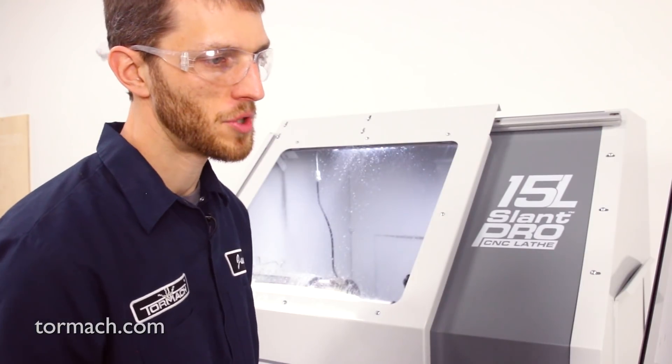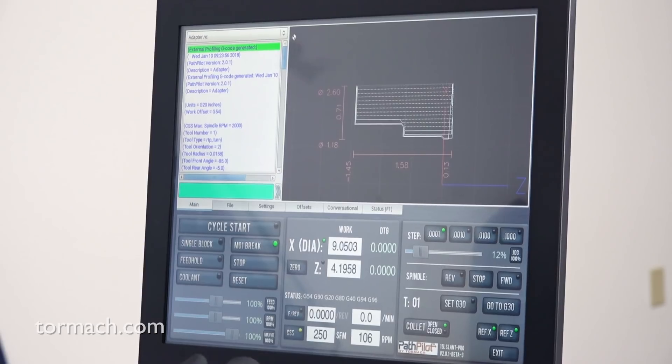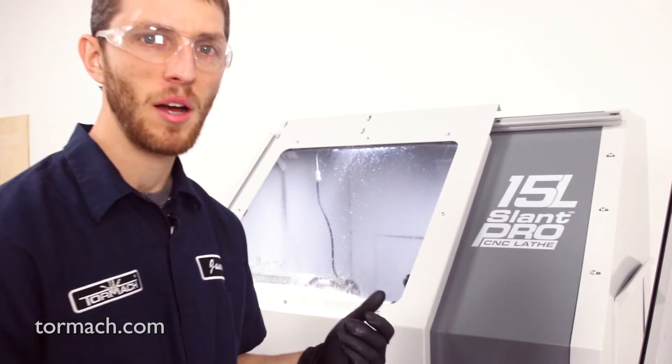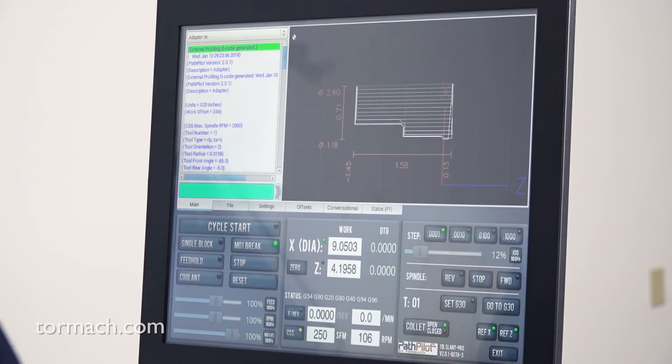All right, so we got a little program generated here using the profiling in conversational. We did about 500 SFM to cut, about 7 thou per revolution feed rate for roughing and 5 thou on the finish.